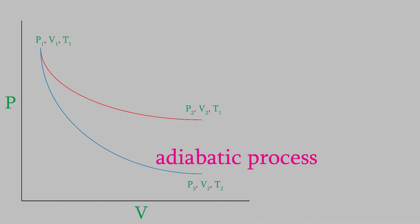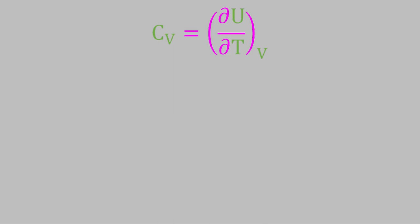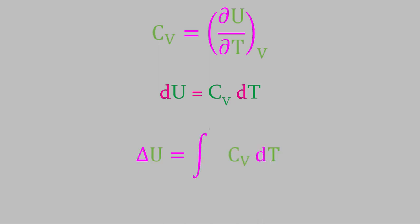Let's find expressions for energy, enthalpy, heat, and work for an adiabatic process. The heat is easy: since the heat is constant, q is equal to zero. For the energy, the constant volume heat capacity equals du over dT. We can solve for dU by multiplying both sides by dT, then integrate to get delta U. If the heat capacity is constant with temperature, we can pull it out of the integral, giving us Cv times delta T for the energy.